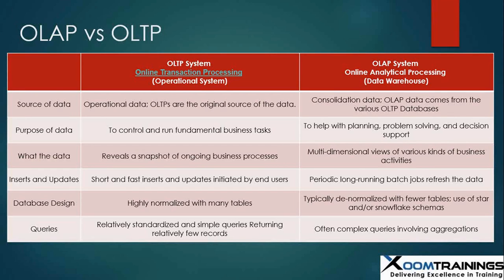In the OLTP, it's basically daily transactional data, so it reveals a snapshot of an ongoing business process. Whereas in OLAP you have a multi-dimensional view of various kinds of business data — it can come from transactional data, from ERP, from CRM. So it's a combination of multi-views of data. How we insert and read the data also differs between OLTP and OLAP systems.